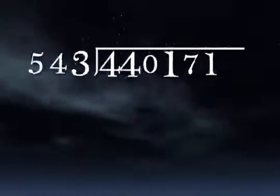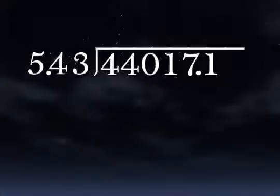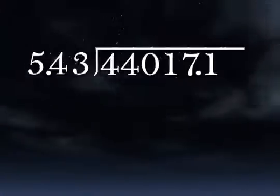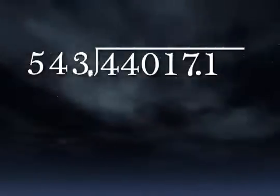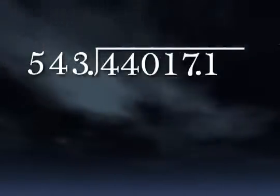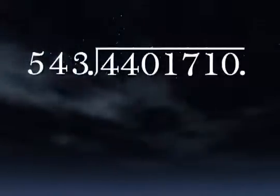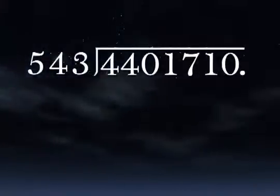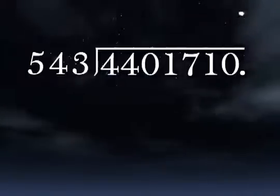When dividing decimals, move the decimal point of the divisor, if it has one, over to the right, however many places it takes for it to have no decimal value. Move the decimal point of the number being divided the same number of places over to the right. Add placeholder zeros if you need to. Directly above that decimal point goes the answer's decimal point.